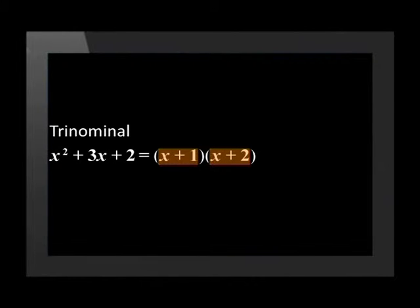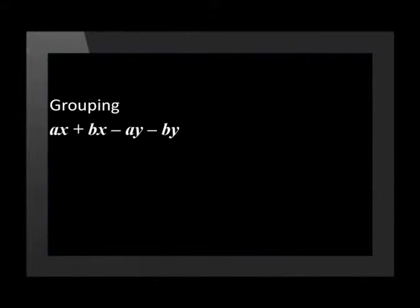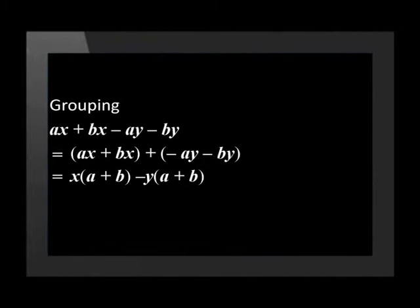If these brackets were multiplied out, we would return to the expression x squared plus 3x plus 2. By grouping: in this example, we group the first two terms and the second two terms together. By doing this, we find that there is a highest common factor of x in the first two terms and a highest common factor of negative y in the second two terms. By taking out these common factors, we find that there is a common bracket of a plus b, which if we take out as a common factor, we are left with the bracket a plus b multiplied by the bracket x minus y.